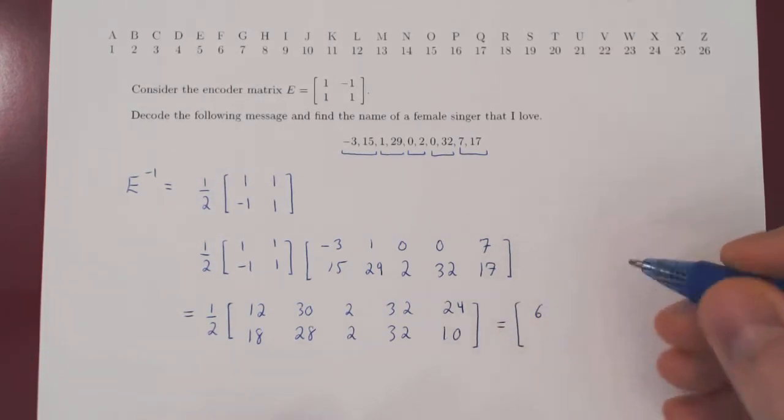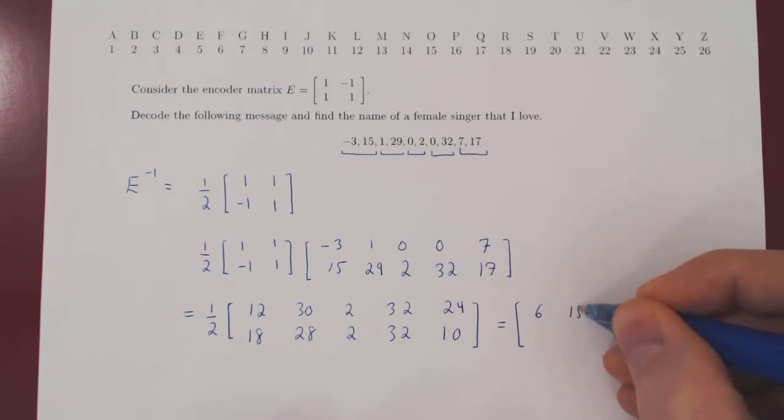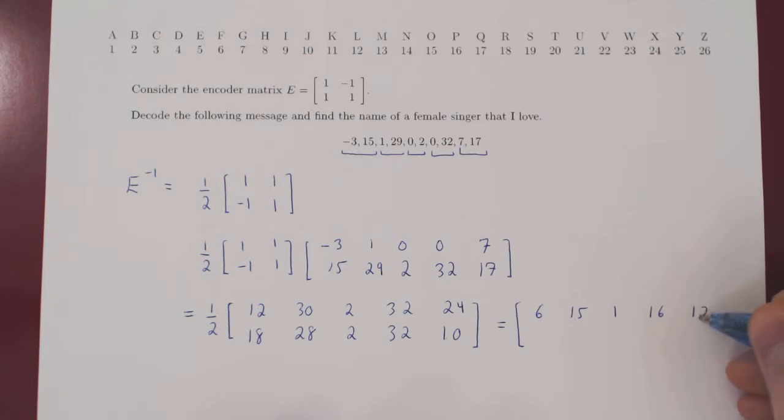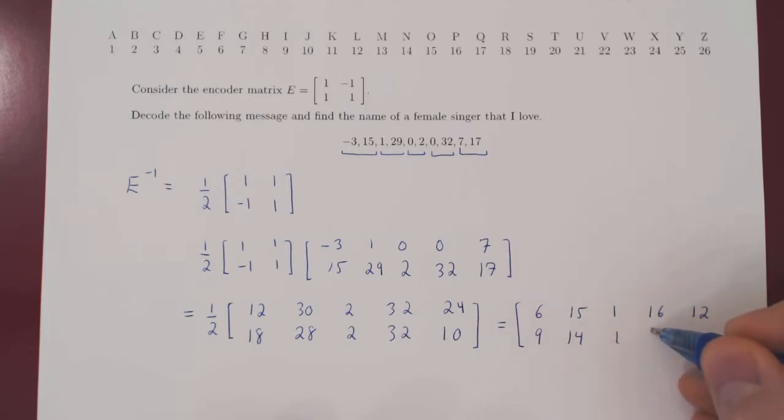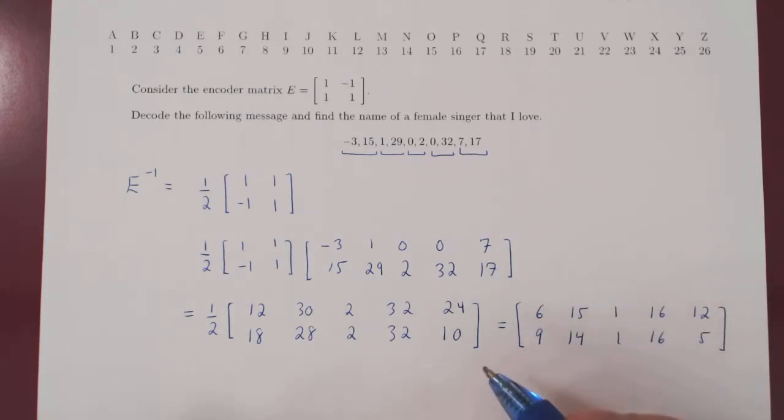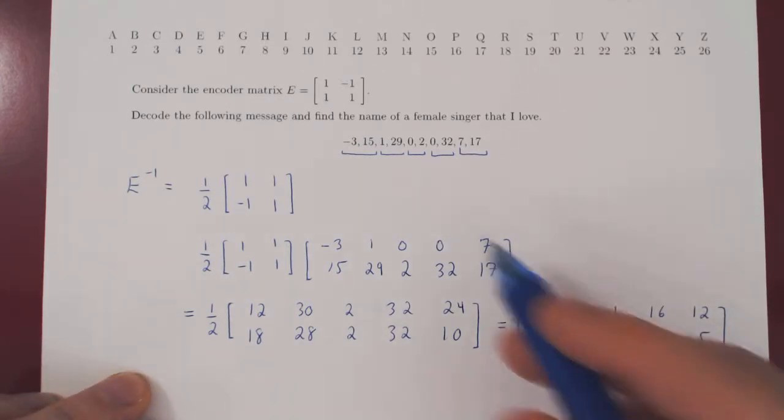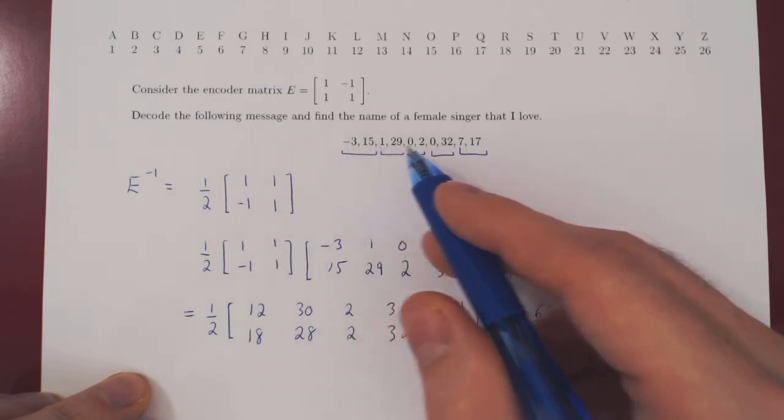We now must multiply every entry by 1 half. This is quite easy. So first row becomes 6, 15, 1, 16, 12. Second row becomes 9, 14, 1, 16, and 5. So now we have the decoded matrix. Let's rewrite this into a string of characters. This was the encoded message.